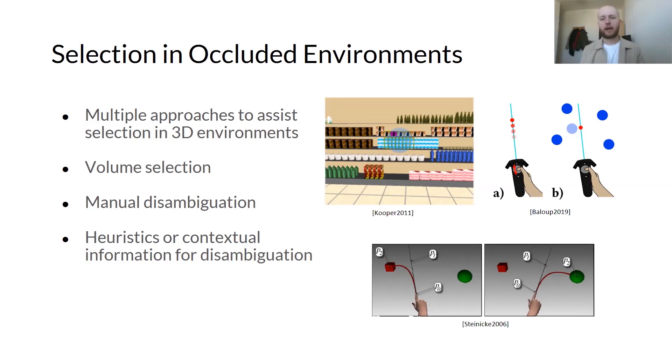To compensate for accuracy and occlusion issues, raycasting can be combined with volumetric techniques for selection. This requires disambiguation from initially selected objects, and this can be done via an additional manual step, or by applying heuristics or contextual information for implicit disambiguation.